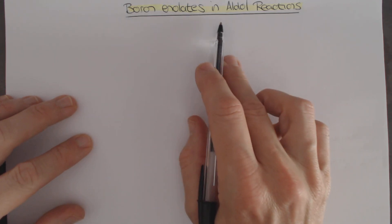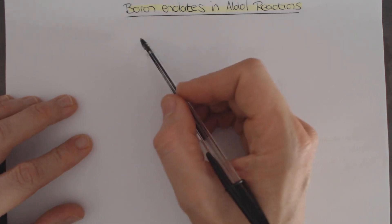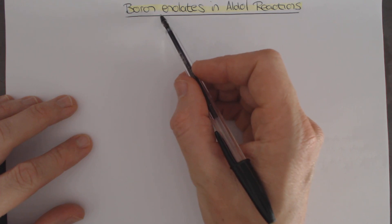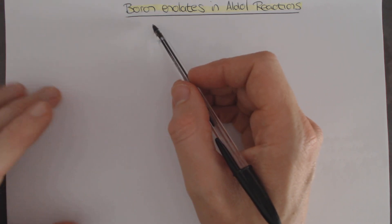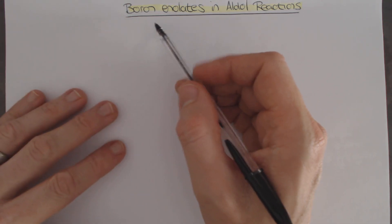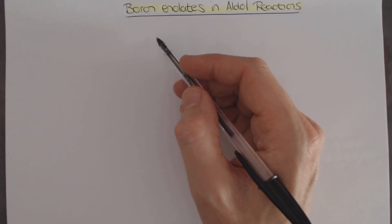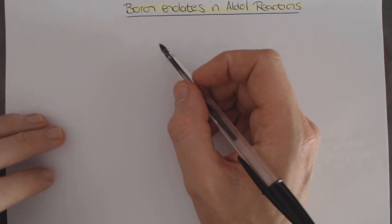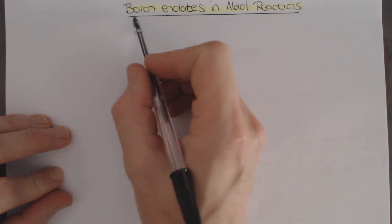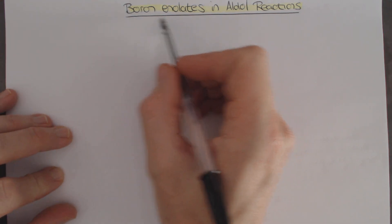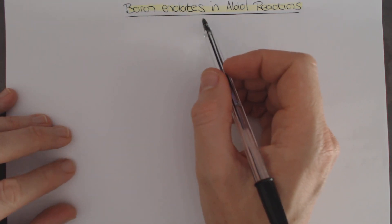I want to talk about boron enolates in aldol reactions. Up until this point we haven't actually looked at what a boron enolate is. We've learned about a whole host of other enolates, aza enolates and enamines and silyl enol ethers. The silyl enol ether is the one that's going to be closely reminiscent to this type of chemistry.